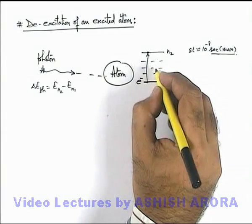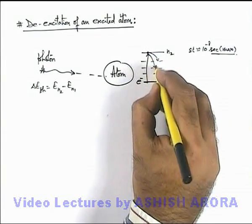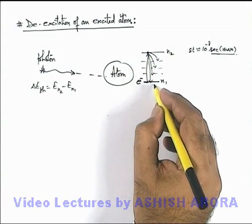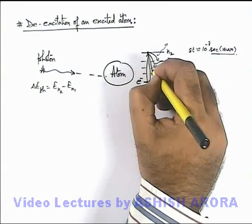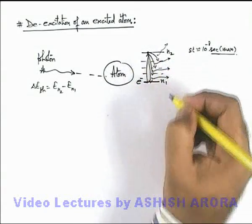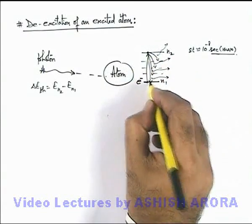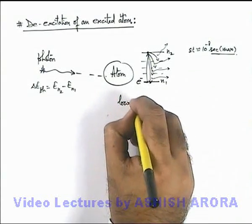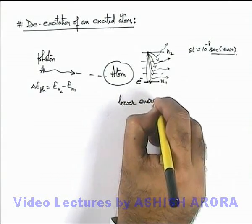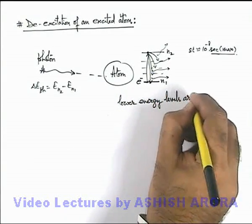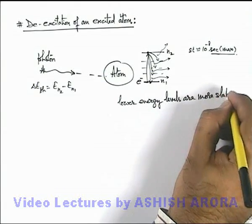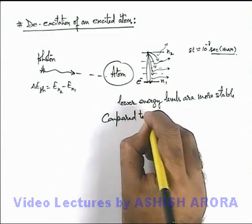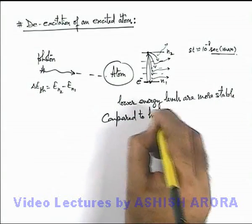So it has many possibilities. It can either shift to any of the intermediate states or directly back to the state n1, and will release different photon or photons in the process, and finally it will come back to the lowest vacant energy state because always we can say lower energy levels are more stable compared to higher energy levels.